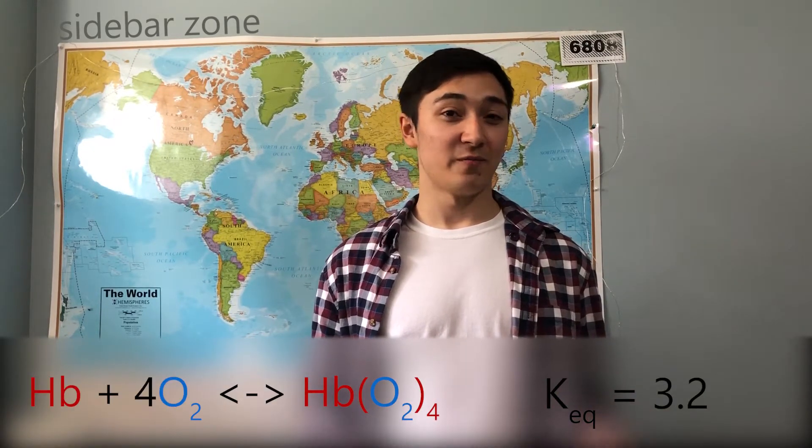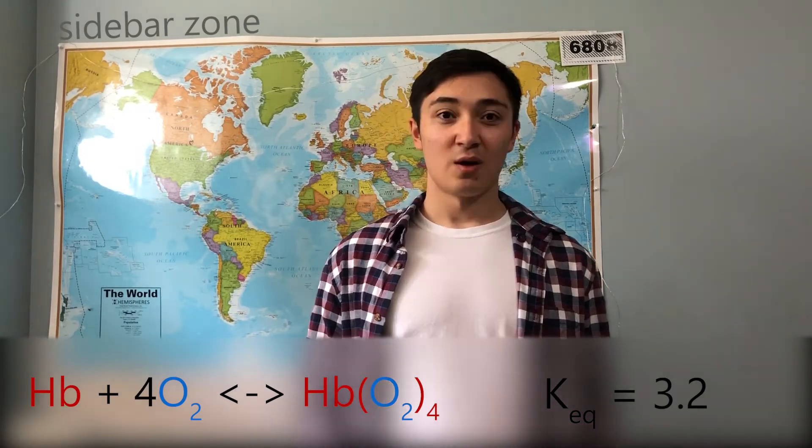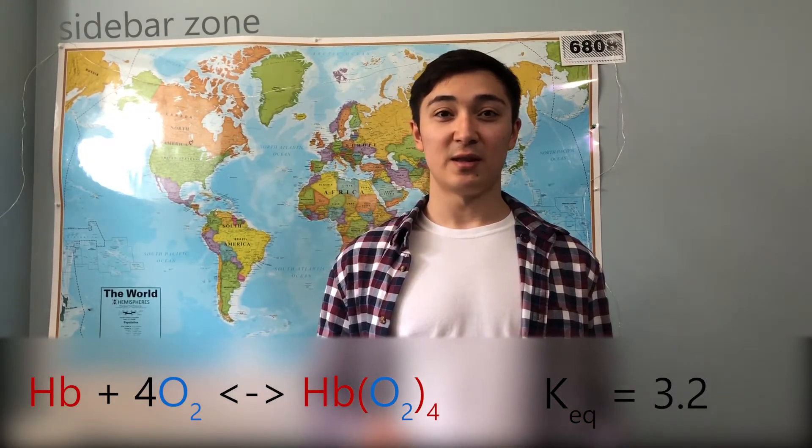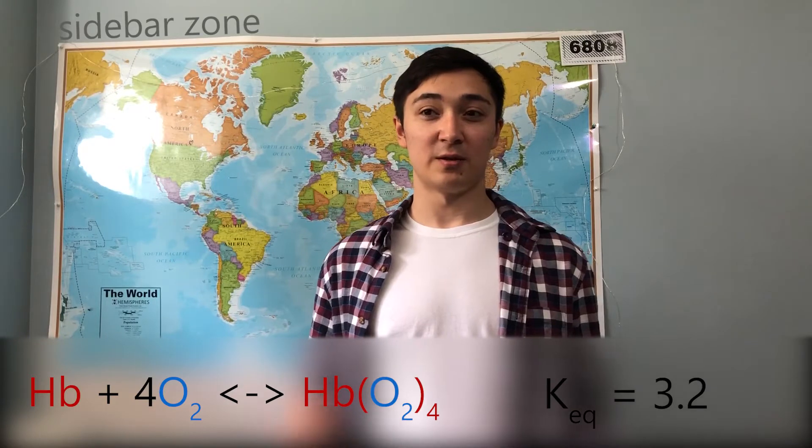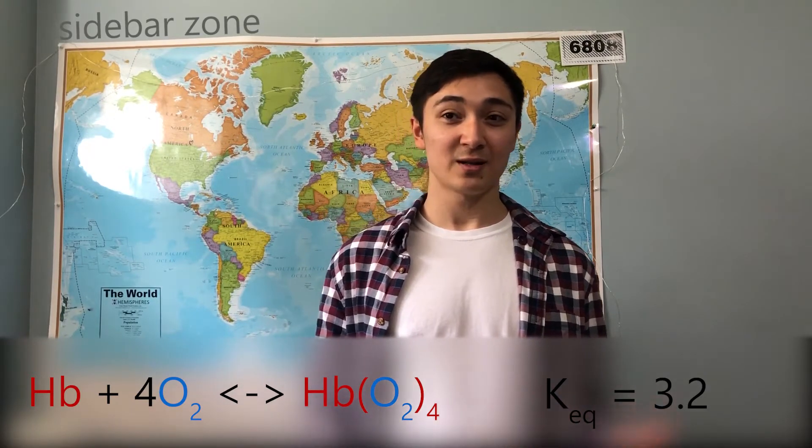This can be compared to the equilibrium equation of oxygen and hemoglobin, which only has a K equilibrium value of around 3.2. While this is high, it's not shifting the equilibrium nearly as far to the side of the products as the carbon monoxide reaction is. Looking at the K equilibrium values of each individual reaction gives us a better and more practical sense of the molecular affinity and rate of dissolution of both carbon monoxide and oxygen when bonded to hemoglobin.